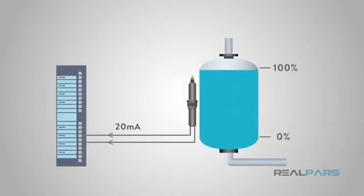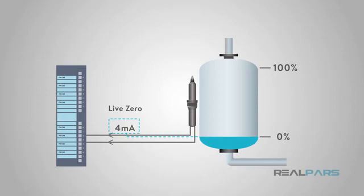Lastly, 4 to 20 milliamp current loop signals provide a basic level of diagnostics. Since 0% equals a 4 milliamp signal, a broken wire would break the circuit and 0 milliamps would be sensed. This Live Zero feature, where 0% is equal to a value of greater than 0 milliamps, allows the control system to detect a broken wire at 0 milliamps.